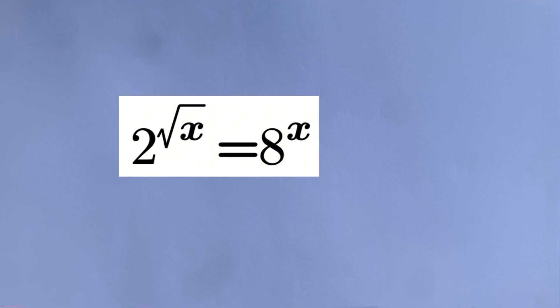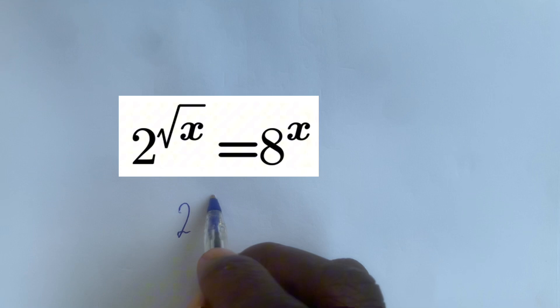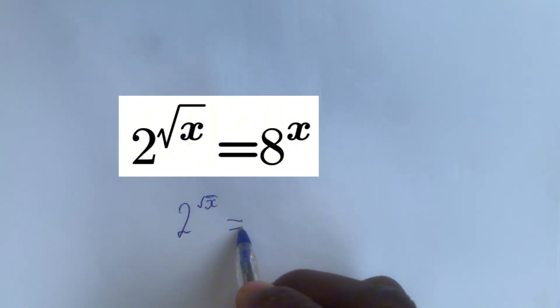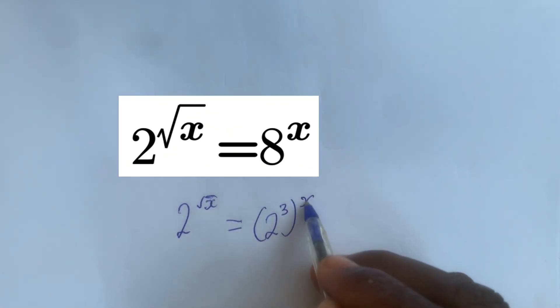We've been given 2^√x equals 8^x. Now how do we do this? This can be written as 2^√x equals—8 is the same as 2^3—and we have power x.